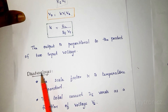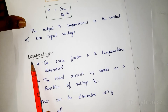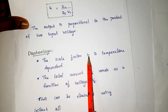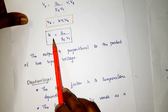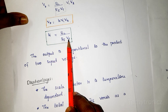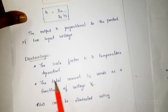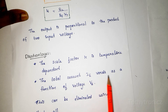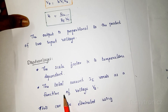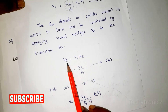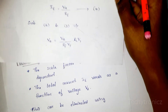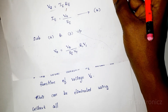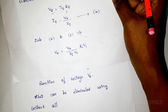Next we look at the disadvantages of variable transconductance. The first disadvantage is that the scale factor k is temperature dependent, since k depends on Vt which varies with temperature. The second disadvantage is that the total current IE varies as a function of voltage V2, since V2 equals IE times RE. These disadvantages can be eliminated by using the Gilbert cell.